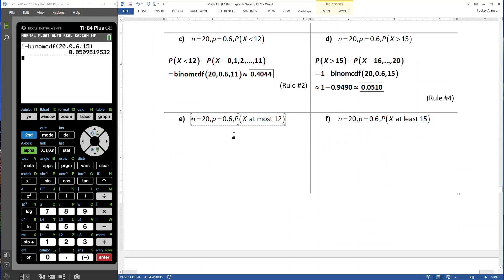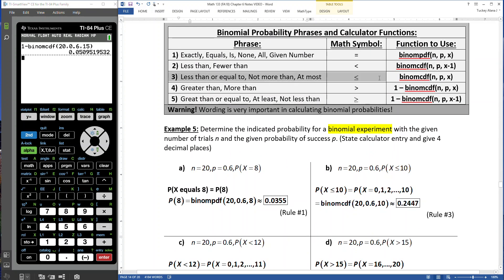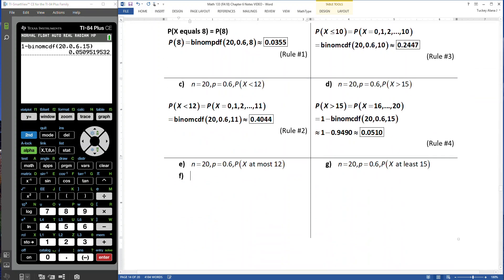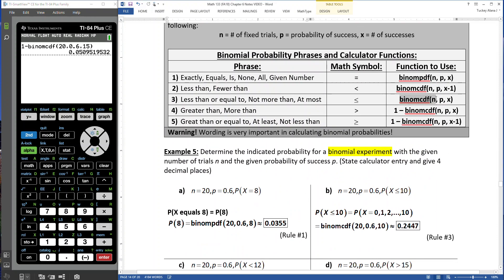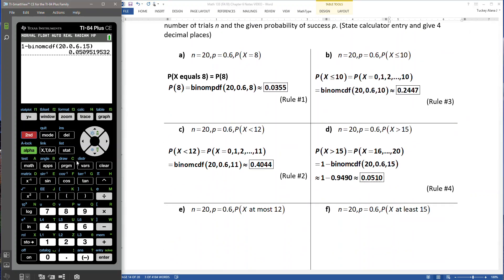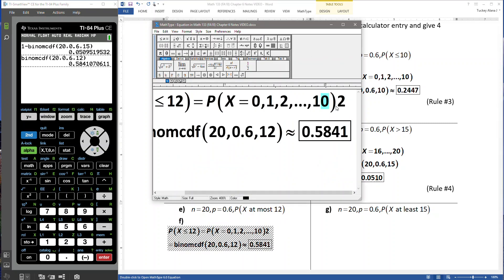What if we use words? What if it's the probability that x is at most 12? At most is right here. At most is less than or equal to, so that's another rule number 3. At most 12 would mean less than or equal to 12. According to rule number 3, binomial CDF, n=20, p=0.6, x is the number I was given which is 12. I use second distribution, alpha B, 20, 0.6, 12, paste and enter. I get 0.5841.